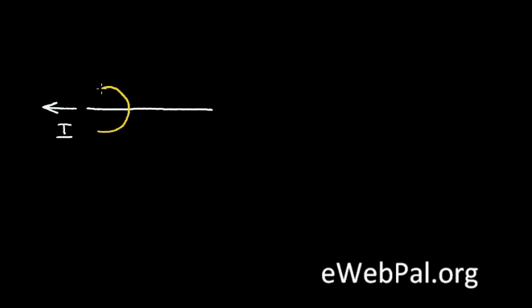I'm going to induce a current to flow in this wire that I will call I. An interesting thing happens — a magnetic field is produced around this wire, and I'll denote this magnetic field by the symbol B.